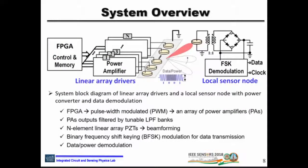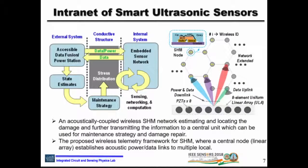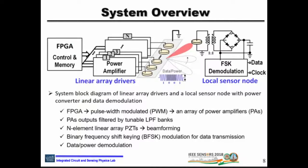We use an FPGA to store waveforms and control the beam properties. The signal is pulse-width modulated, then amplified, then low-pass filtered for pulse-width demodulation, and then sent to the linear array. At this stage, analog signals with different amplitudes and different phases — each controlled by the FPGA — drive each element of the linear array. These signals are designed so that when converted into ultrasonic surface waves, they interfere to form beams. On the receiving side, local sensor nodes receive power and demodulate the data.